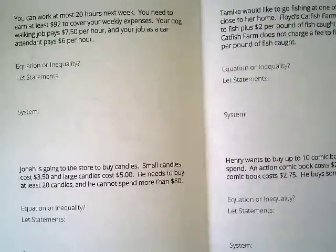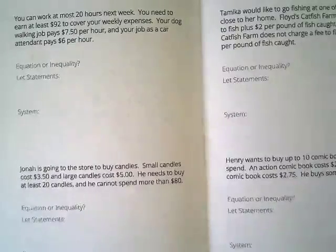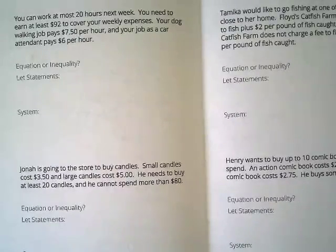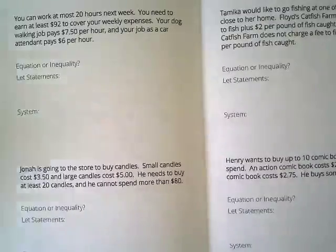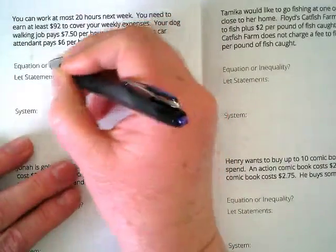All right. New person to read. Third problem. Thank you. You can work at most 20 hours next week. You need to earn at least $92 to cover your weekly expenses. Your dog walking job pays $7.50 per hour, and your car attendant job pays $10.50 per hour. Go back to the very first sentence. At most. At most. That's telling us that we're writing an inequality this time.